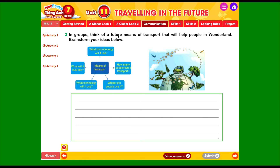Trong bài tập số 3, chúng ta sẽ chọn ra một phương tiện nào đó trong tương lai có thể giúp cho người dân ở Wonderland giải quyết các vấn đề đó. Bên dưới sẽ là một số gợi ý: 'Means of transport' — phương tiện nào. Các khía cạnh có thể khai thác: 'What kind of energy will it use?' — phương tiện đó sử dụng năng lượng nào? 'How many people can it transport?' — có thể chở được bao nhiêu người? 'Where can people use it?' — mọi người có thể sử dụng nó ở đâu? 'What technology will it use?' — công nghệ tiên tiến nào? 'What will it look like?' — nó sẽ trông như thế nào?